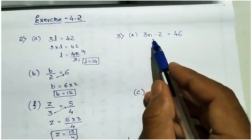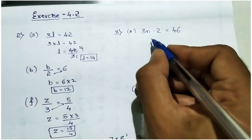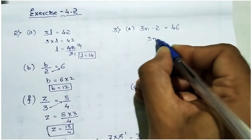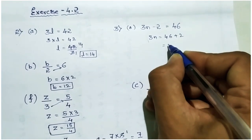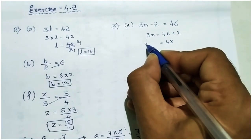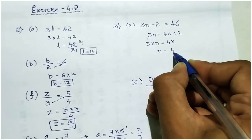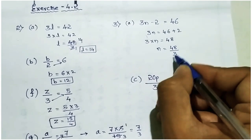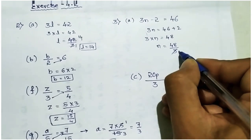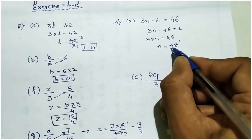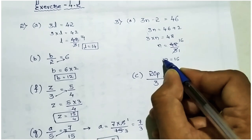In third main: 3n minus 2 equal to 46. First take minus 2 to the right side — it becomes plus 2 — so 3n equal to 46 plus 2 which is 48. Then take the 3 to the right side, it becomes divisible: 48 divided by 3. 3 ones are 3, remaining 1 becomes 18, 3 sixes are 18, so n equal to 16.